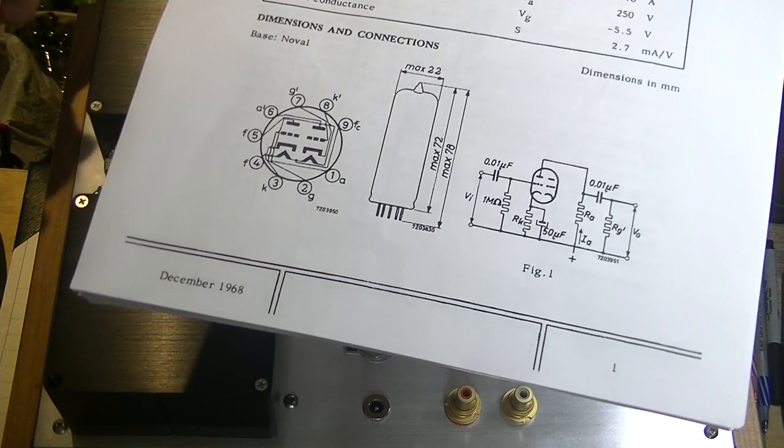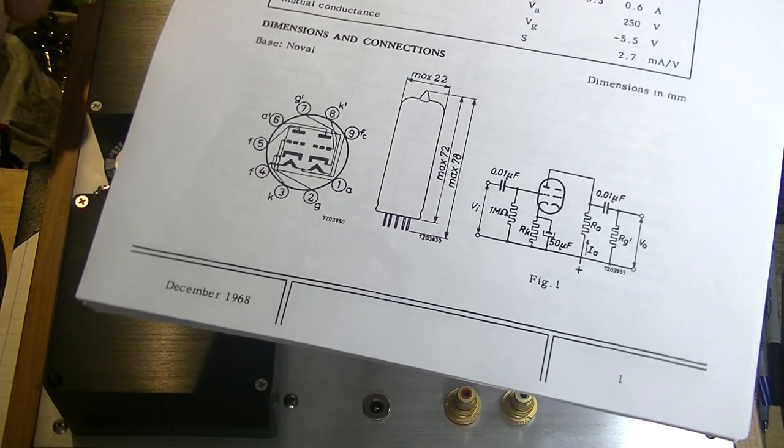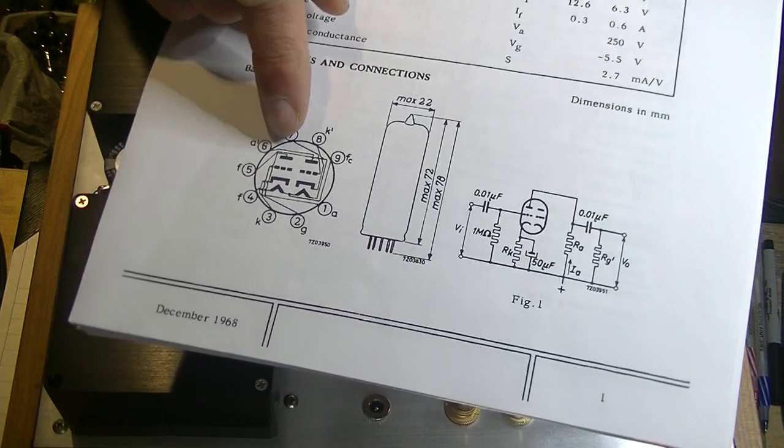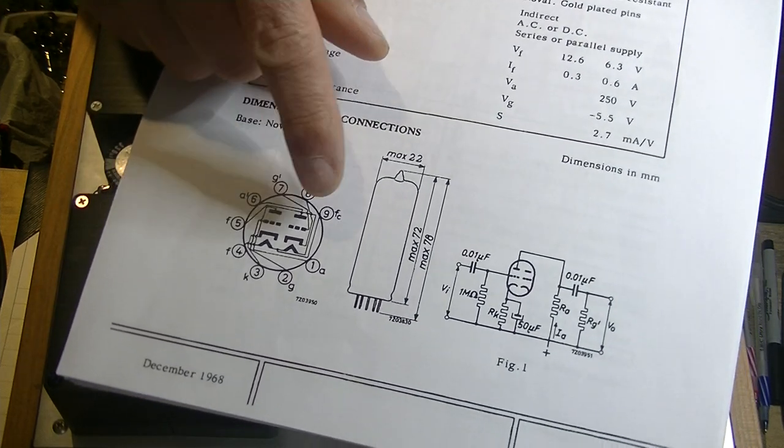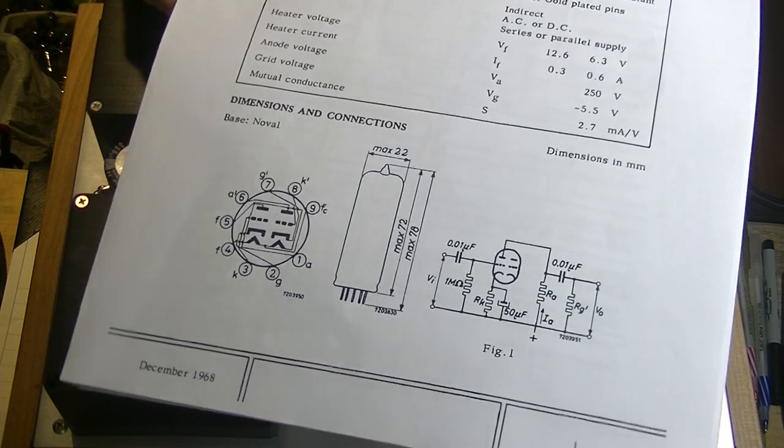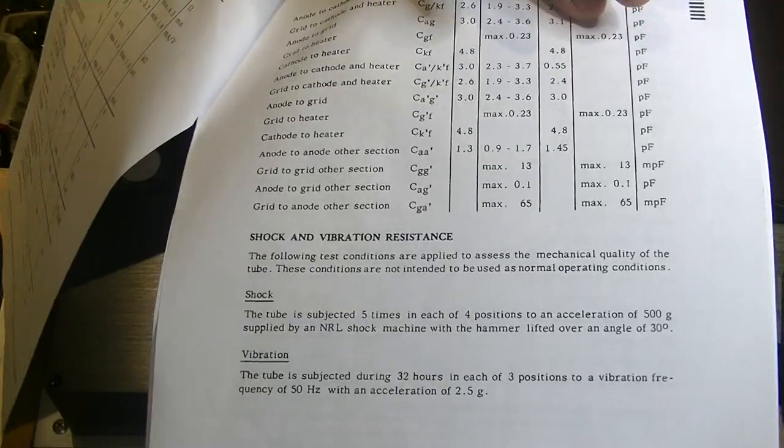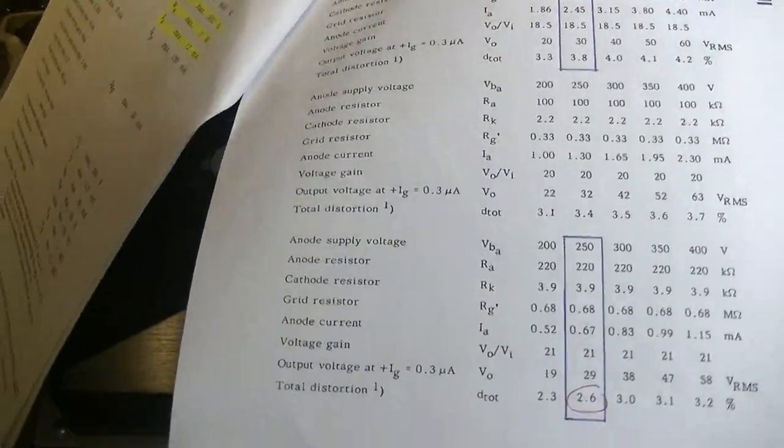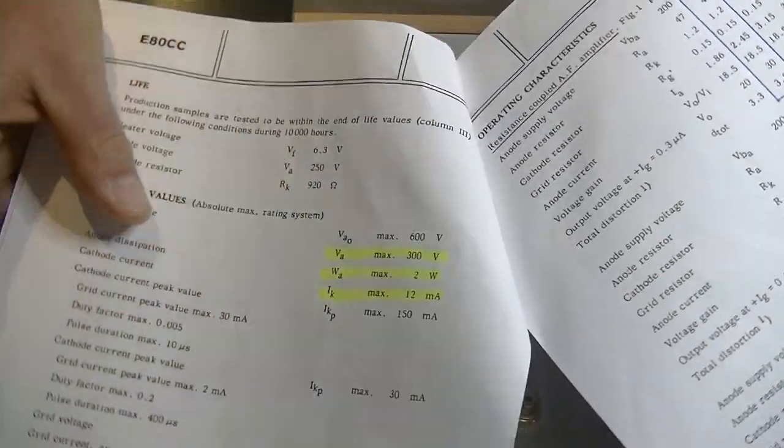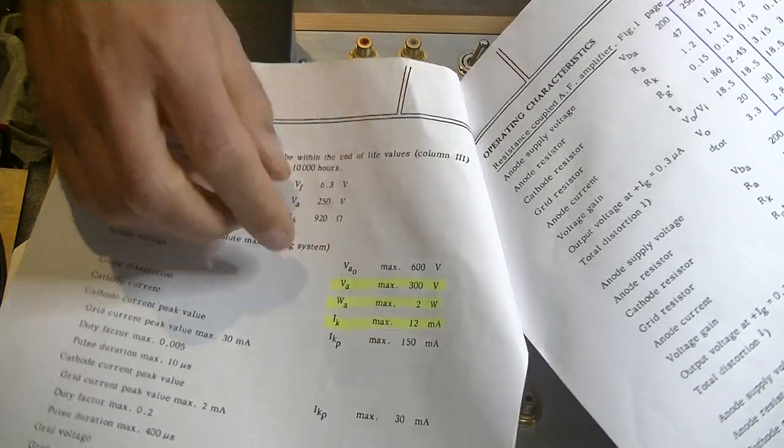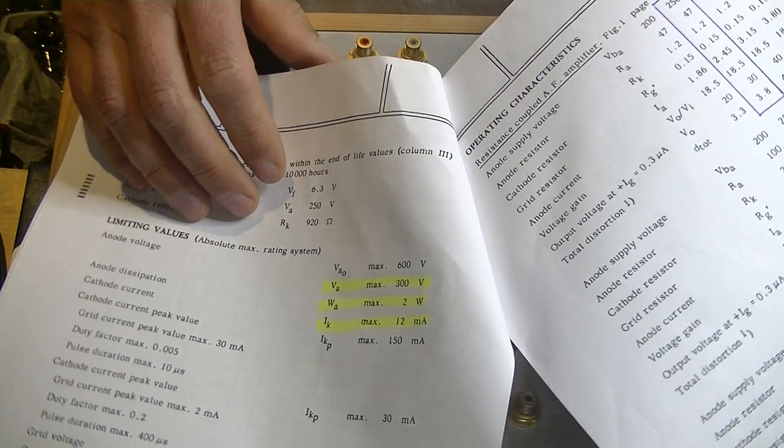I've talked at length in other videos about the E80CC, but basically it's a twin triode, so two identical tubes inside one envelope. And this is a really detailed datasheet filled with information. Like all datasheets, we'll get design maximums, so we need to keep all our values, our operating points, inside of those maximums.